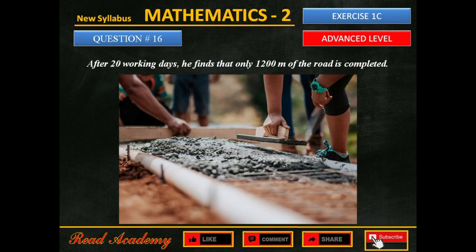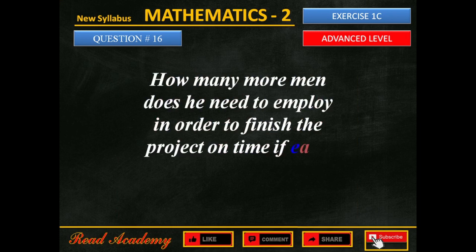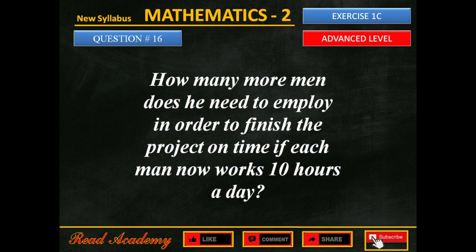After 20 working days, he finds that only 1,200 meters of the road is completed. How many more men does he need to employ in order to finish the project on time, if each man now works 10 hours a day?